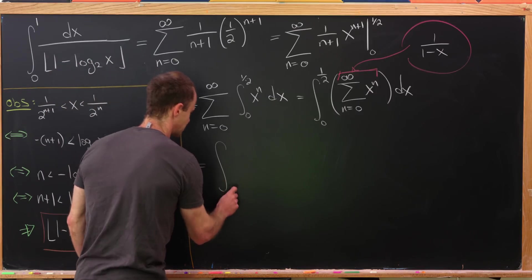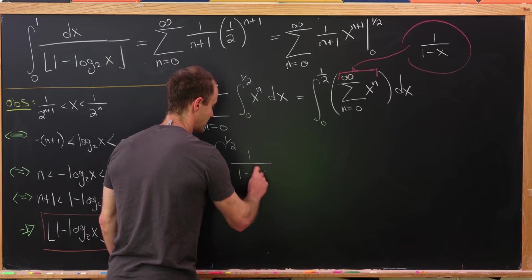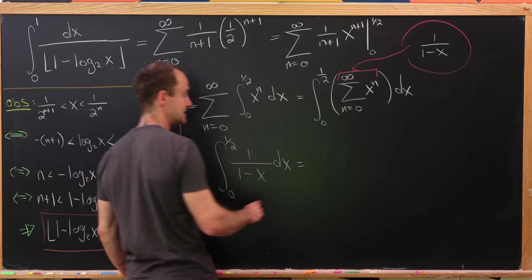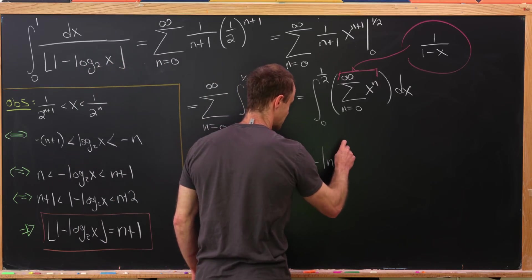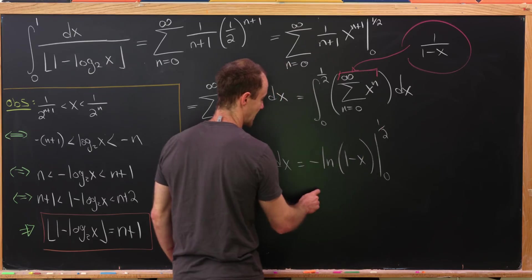Okay, so that's going to leave us with the integral from 0 to 1 half of 1 over 1 minus x dx. The antiderivative of that is quite easy. It is minus natural log of 1 minus x. We'll evaluate that from 0 to 1 half.